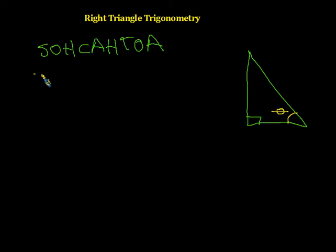Then SOH CAH TOA. If we wanted to find the sine of that angle theta, the way we do it is we take the opposite side over the hypotenuse. Opposite over hypotenuse. And that's what SOH CAH TOA does for us. It helps us to remember this.